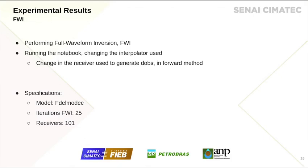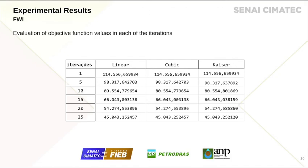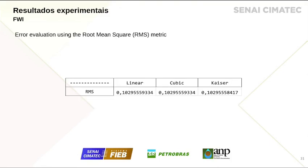We performed experimental results by running a full waveform inversion (FWI) using a model generated by the FDOMod6 script, with 25 iterations and 101 receivers. Each iteration generates an objective function value — the lower this value, the better the result. The linear and cubic interpolators produced the same results, while the Kaiser had similar results — some iterations slightly better, some slightly worse. Using a root mean square error evaluation, we can see that the linear and cubic interpolators got the same result, and the Kaiser, after 20 to 25 iterations, has results slightly better but very close to the others.